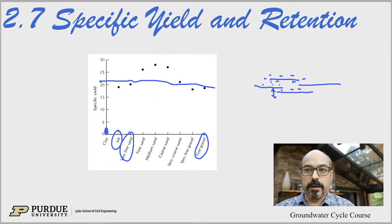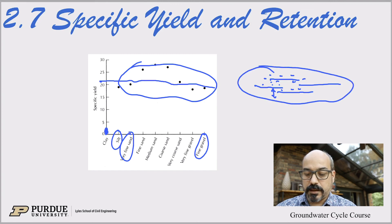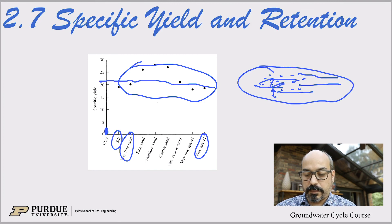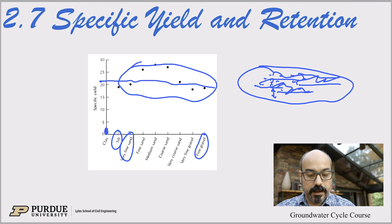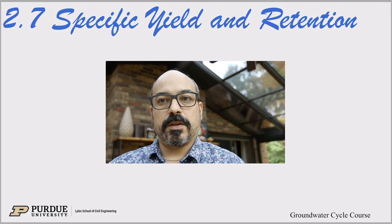Even though porosity and specific yield are usually similar for most grain types, in clay this doesn't hold true anymore. The water trapped in clay has a hard time leaving, which is why the specific yield is very small and the specific retention very high. That concludes this short video on specific yield and specific retention — thank you.